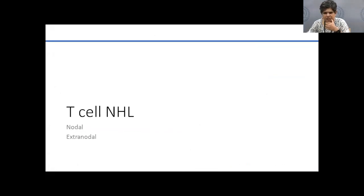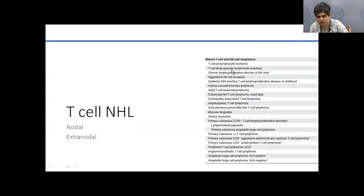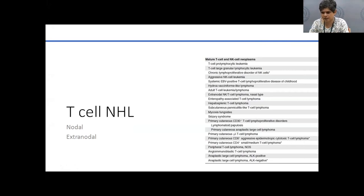T-cell NHLs are a very wide, heterogeneous spectrum, differing from B-cell NHLs in that many are extranodal. They can present in the skin as mycosis fungoides, in the liver and spleen as hepatosplenic gamma-delta lymphomas, as NKT cell lymphomas, in the gut as enteropathy-associated T-cell lymphomas, or as subcutaneous panniculitis-like T-cell lymphomas. They are as often nodal as extranodal, and treatment varies by subtype.